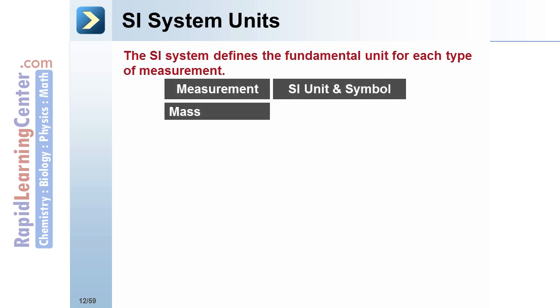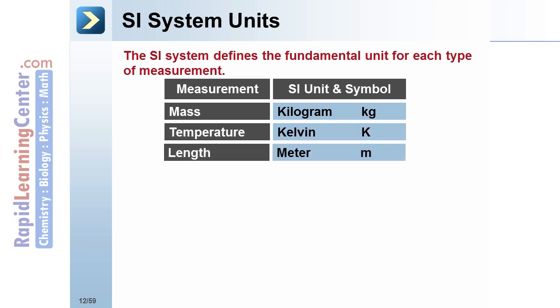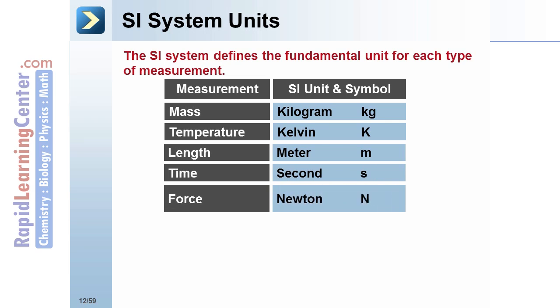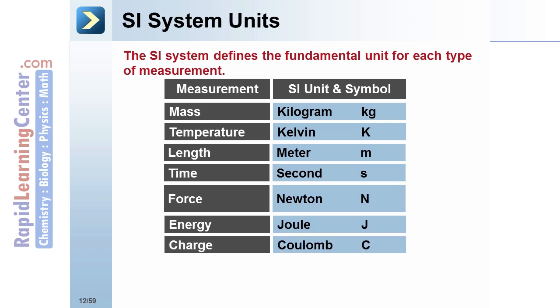For example: mass is in kilograms, temperature in Kelvin, length in meters, time in seconds, force in Newtons, energy in Joules, and charge in Coulombs. The appropriate symbol is also shown with each.